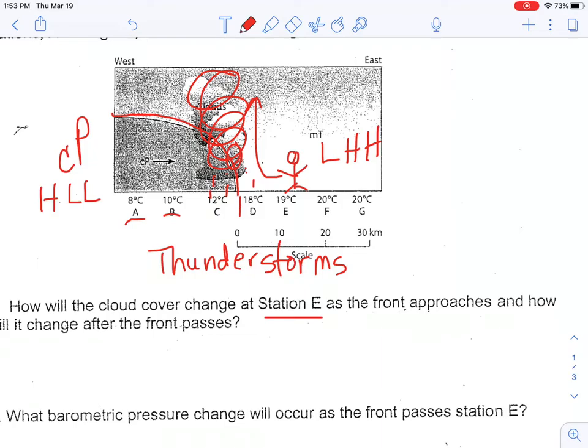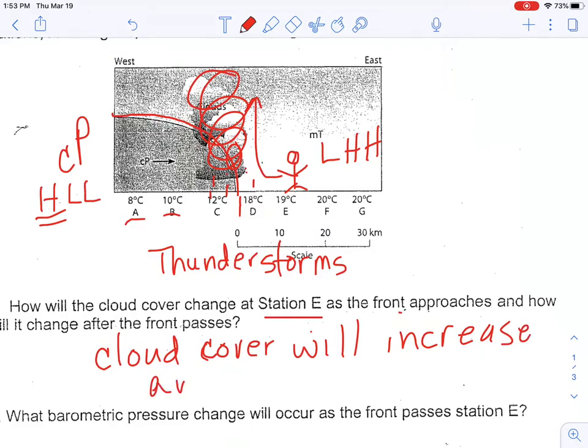I can see this massive cloud approaching me as the front is coming towards me, but then behind it in the cooler continental polar air, it's high pressure, so it's going to be clear skies again. How will the cloud cover change as the front approaches? My cloud cover will increase as it approaches and then decrease in the continental polar air.